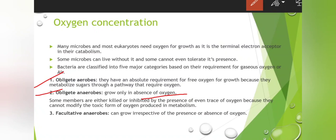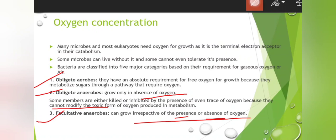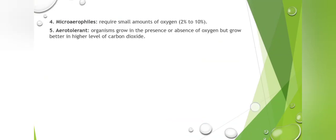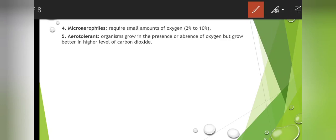Obligate anaerobes cannot survive even if a small amount of oxygen is present, because they cannot modify the toxic oxygen species or toxins present in oxygen — their metabolism cannot accept electrons in its pathway. Next is facultative anaerobes — these can grow both in the presence and absence of oxygen.